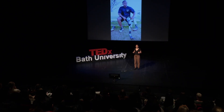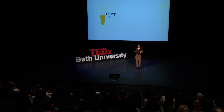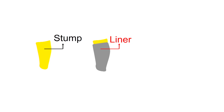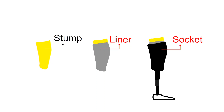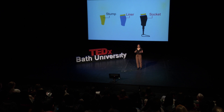Let me explain the main components of a prosthesis. We have the stump, which is what remains after the amputation — it can be below the knee or above the knee. Then we have the liner, which is the first layer above the stump. And then we have the socket, which connects the liner to the prosthesis foot. The liner and the socket together make the interface of the prosthesis.